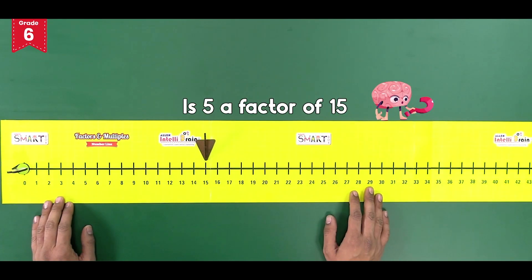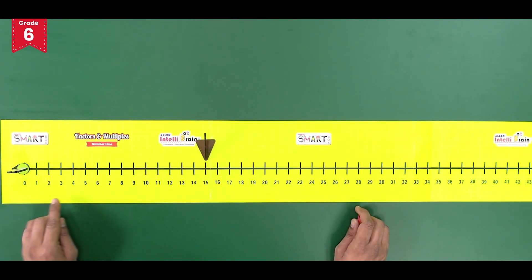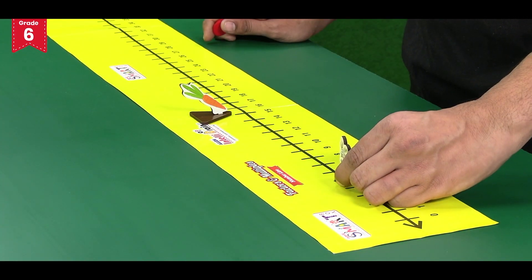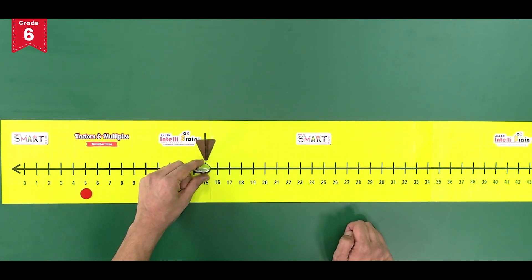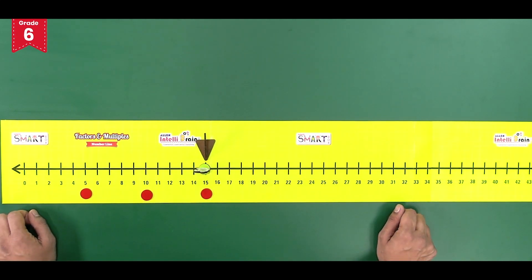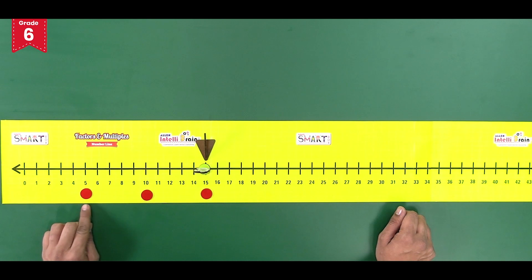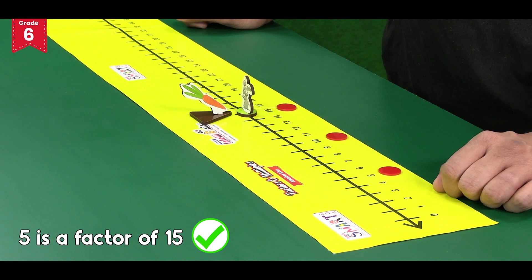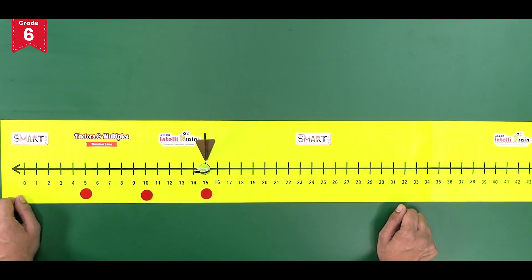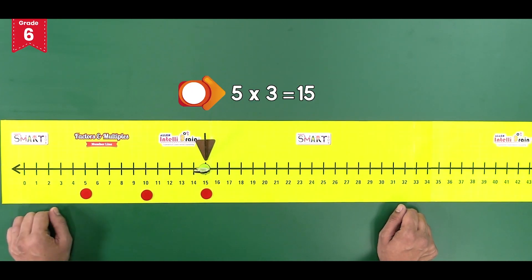What about 5? Is 5 a factor of 15? Let us check. Starting from zero, if the bunny moves towards the carrot by making leaps of 5 numbers at a time, this means 5 is a factor of 15. As there are 3 tokens placed between 0 and 15, this means that 5 multiplied by 3 is equal to 15.